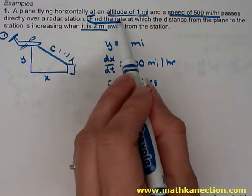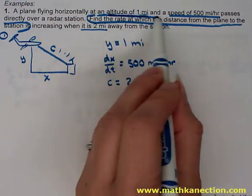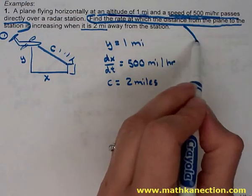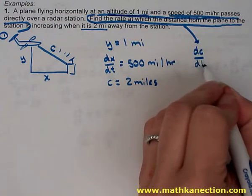The question asks to find the rate at which the distance from the plane to the station is increasing. So we're looking for a rate, which is a d variable dt. And the distance from the plane to the station is c, so we're looking for dc/dt.